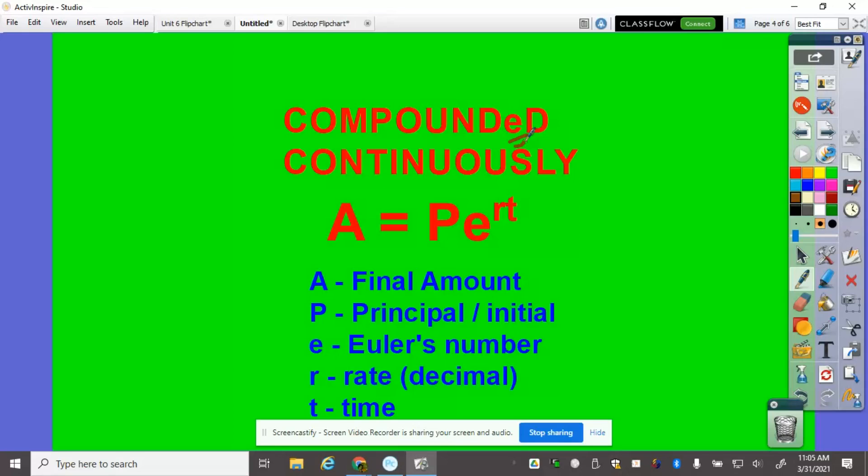So compounded continuously, the formula is, we call it APERT, A equals P, E, R, T. A is the final amount, P is the principal or the initial value, E is your Euler's number, the E, raised to the power of R, T. R is your rate in decimal value, T is the time.